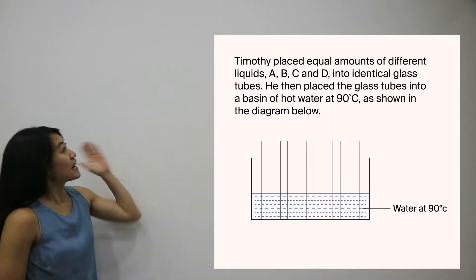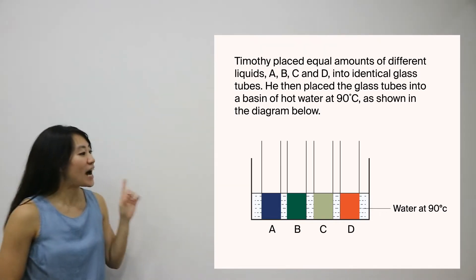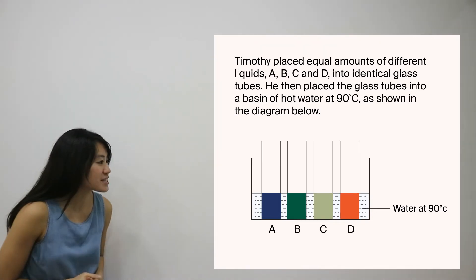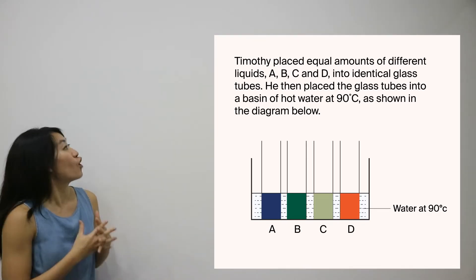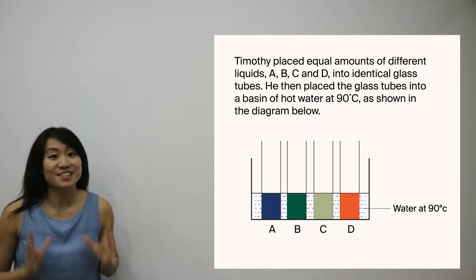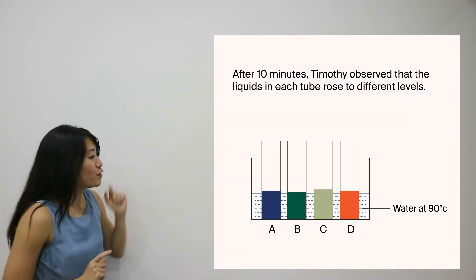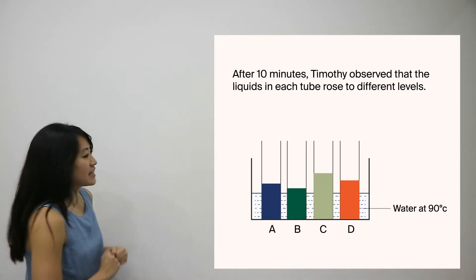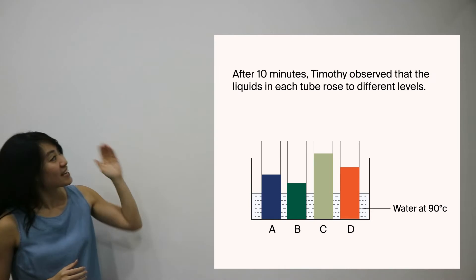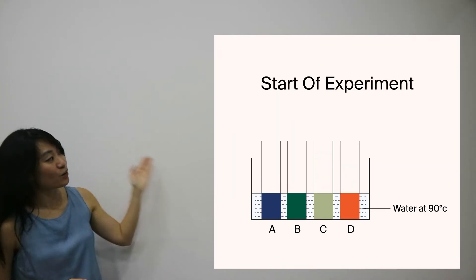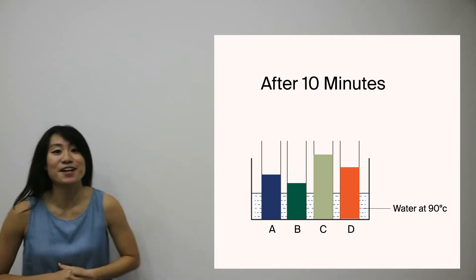Timothy placed equal amounts of different liquids A, B, C and D into identical glass tubes. He then placed the glass tubes into a basin of hot water at 90 degrees Celsius. After 10 minutes, he observed that the liquids in each tube rose to different levels. Now you can see the picture here at the start of the experiment and what happens after 10 minutes.